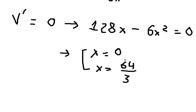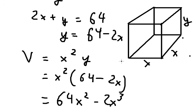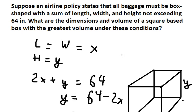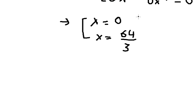Because x equals 0, that means if we put 0 here, the box does not exist. We need to reject this one and we need to select 64 over 3.